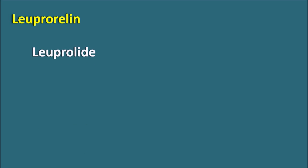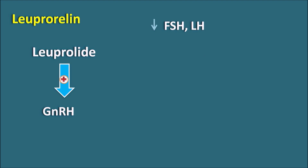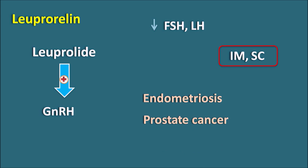The next one is leuprorelin, also called leuprolide, which is a gonadotropin-releasing hormone (GnRH) analog. This drug binds to GnRH receptors and increases GnRH action, but by negative feedback mechanism it decreases the release of gonadotropins — follicle-stimulating hormone (FSH) and luteinizing hormone (LH). Leuprolide decreases FSH and LH levels and is given by intramuscular and subcutaneous routes. It is used in the treatment of endometriosis and prostate cancer.